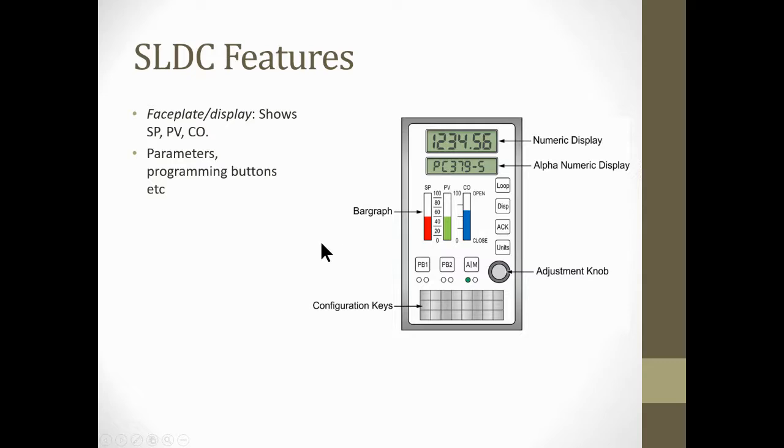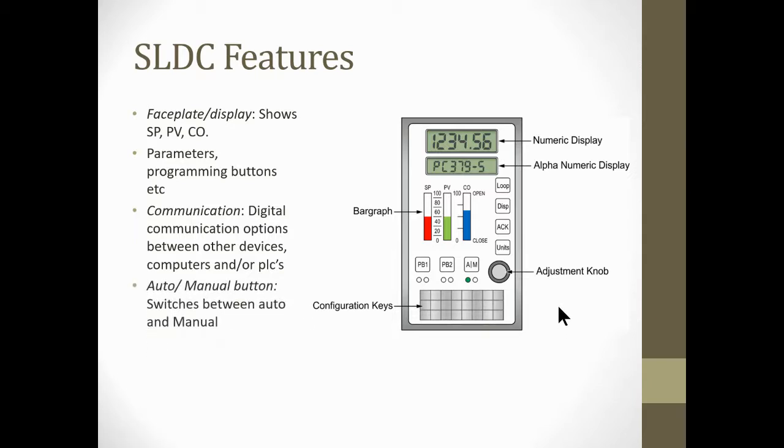We have program buttons. All the buttons are down here. These are the configuration keys, so we can configure our controller depending on what we're using, whether it be discrete or something like an analog signal. Communication: digital communication options between other devices, computers, and/or PLC. Now these can be tied into each other. You probably never see them, probably never will, especially on new plants because they're single loop.